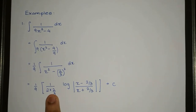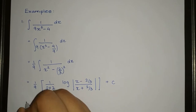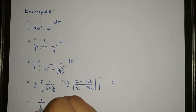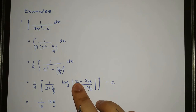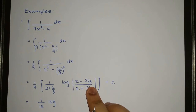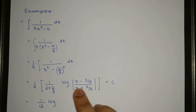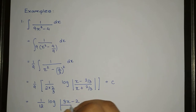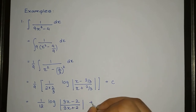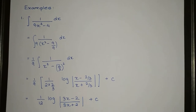Now using the formula, we get 1/9 into 1 divided by 2 into (2/3), log of (x minus 2/3) divided by (x plus 2/3) plus c. Simplifying, the threes and nines cancel, giving us 1 upon 12, log of (3x minus 2) divided by (3x plus 2) plus c. That is our final answer.